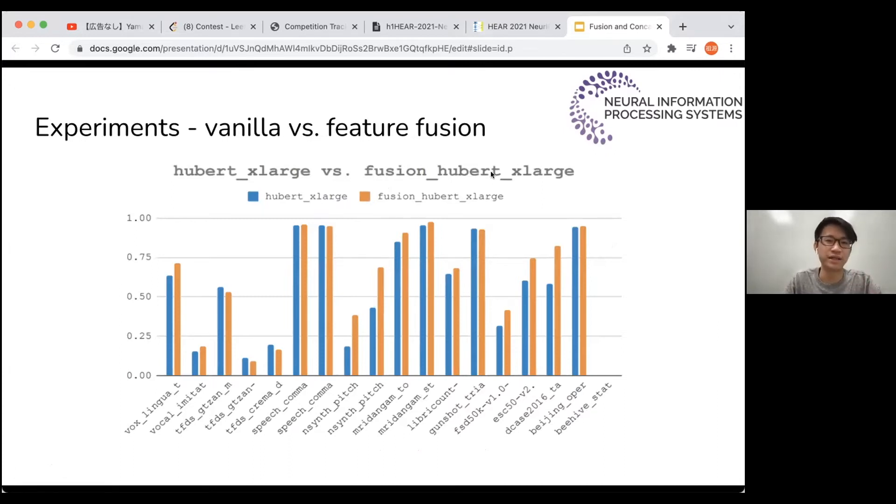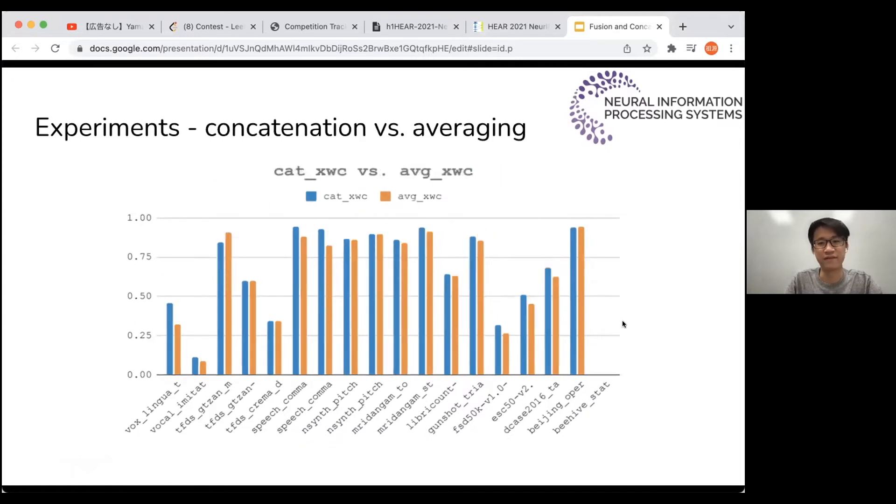We find that feature fusion is generally a good way to promote the performance of a vanilla model. This is the accuracy measure of each task. These are 18 different sub tests, downstream tests. Our models have some problems in the Voxceleb state test, so we have no scores there.